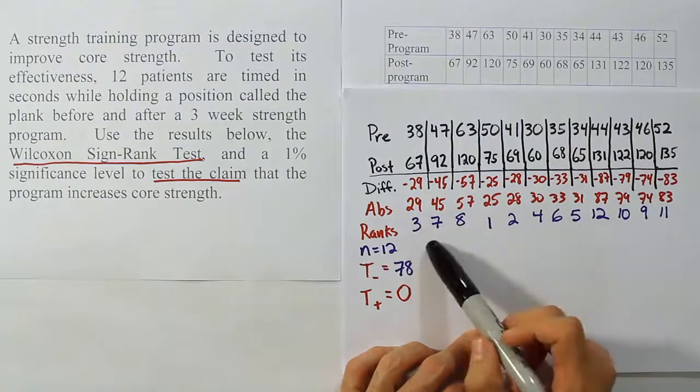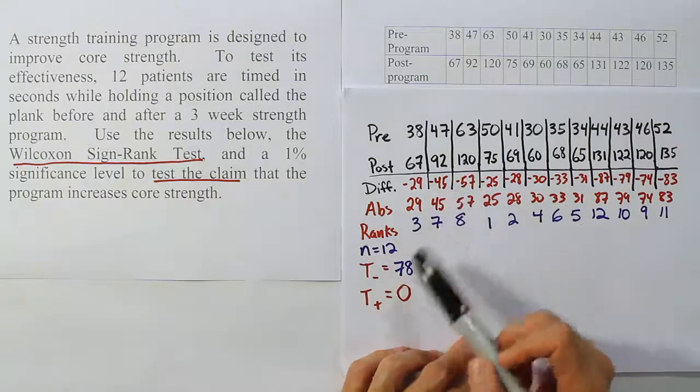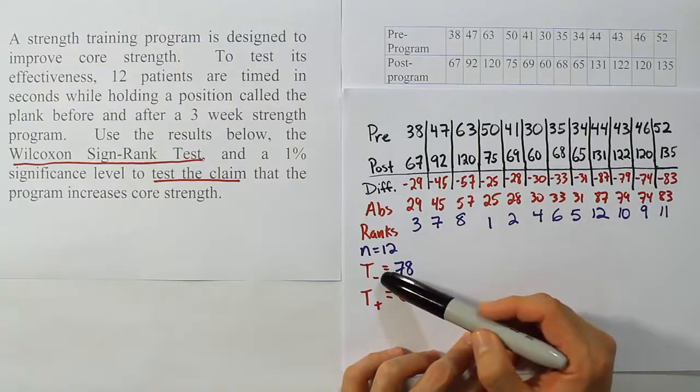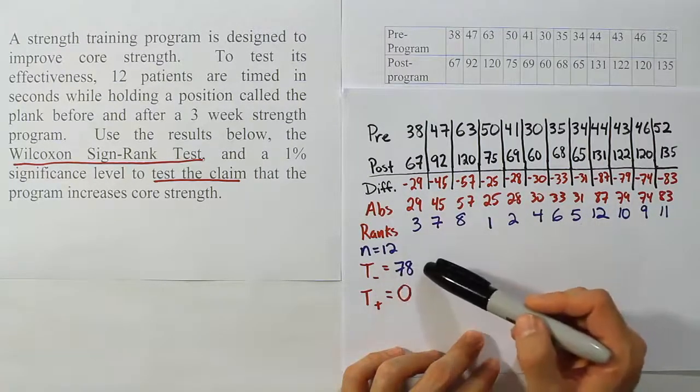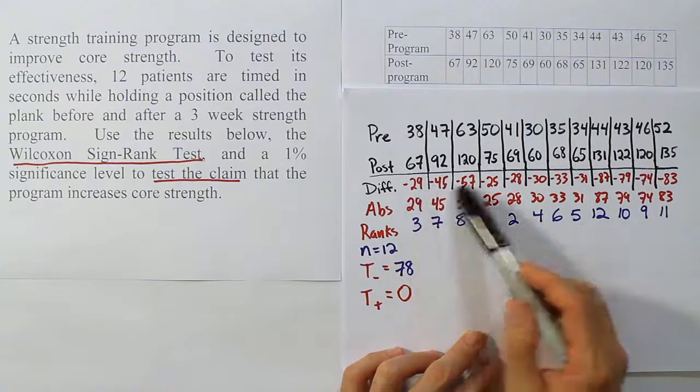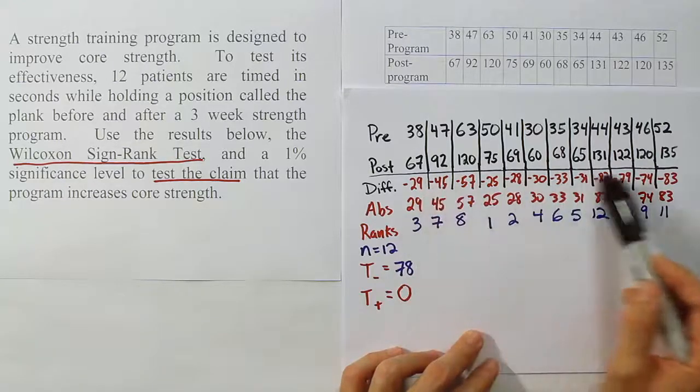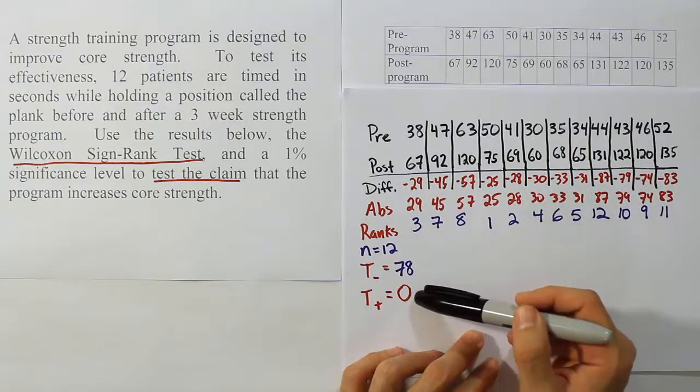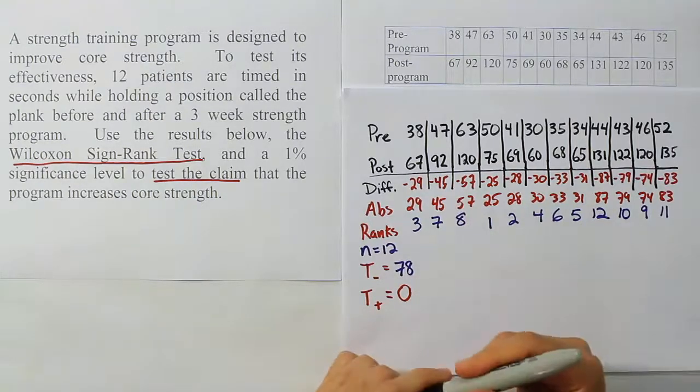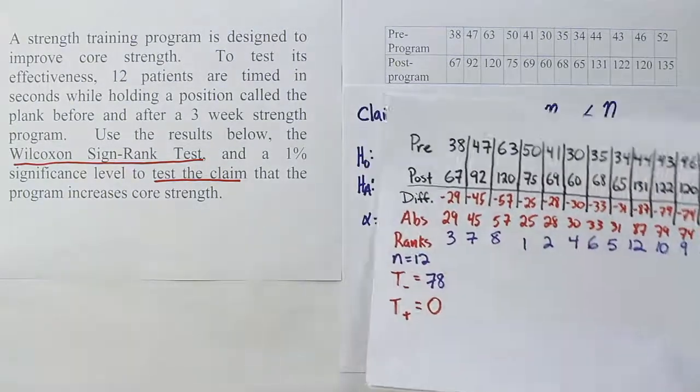After we have the ranks, then what we do is we go back and we total up the ranks for the negative differences and total up the ranks for the positive differences. Now here, because all the differences were negative, the rank total for my negative differences has got all the values. It's got 78. So if I add up all these blue numbers, the ranks for all the negative differences, I get 78. There are no positive differences, so the rank total for that category is 0. Now, let's take that information back to our hypothesis testing procedure to see what that means for us in terms of our test statistic.